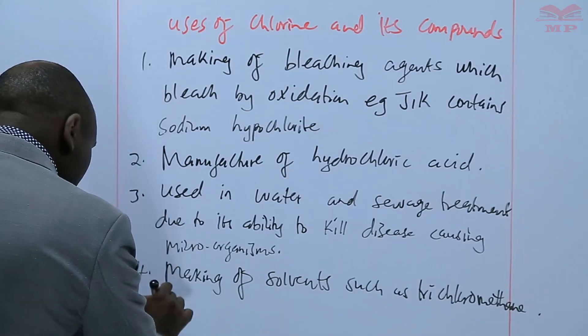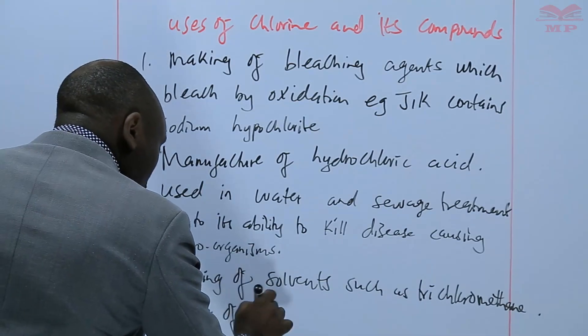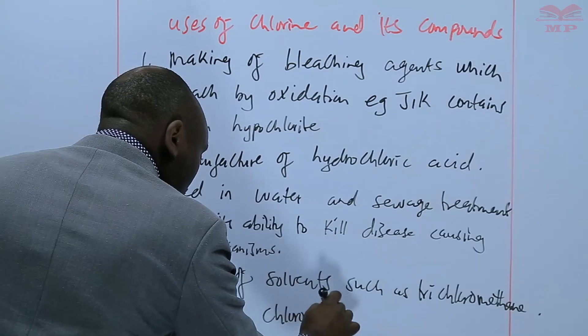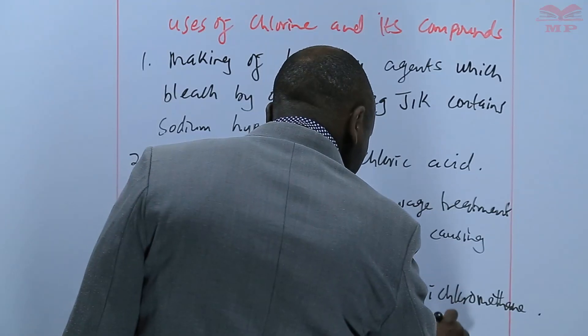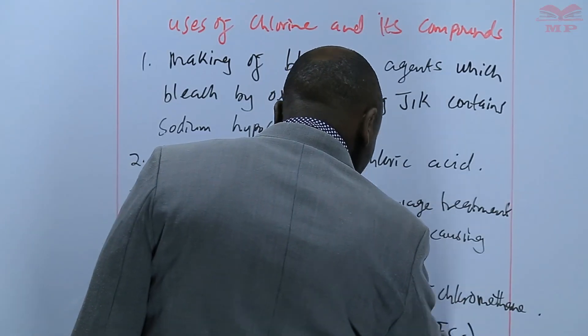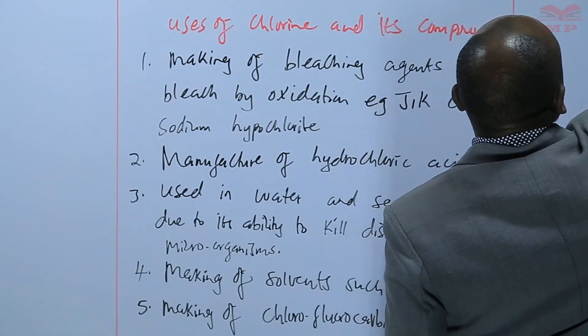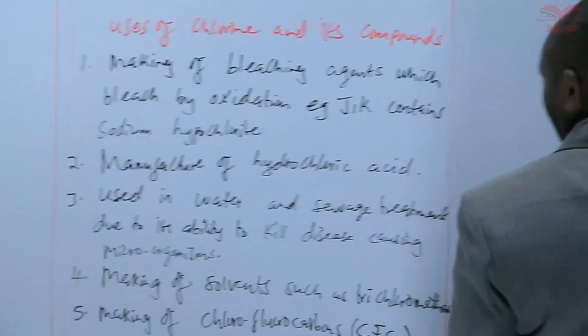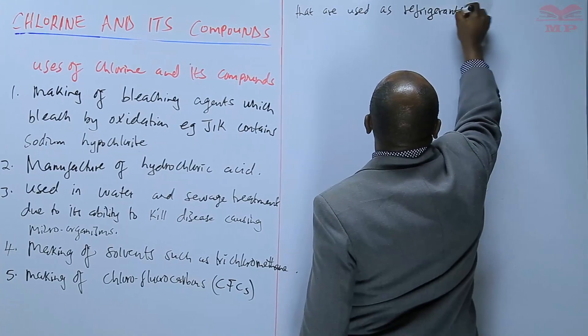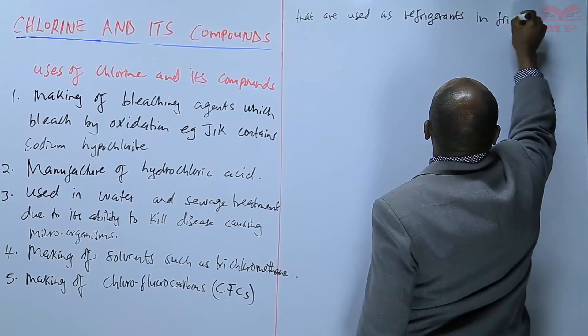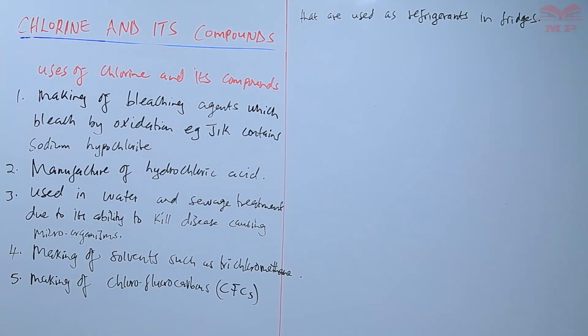Chlorine is also used in the making of chemicals called chlorofluorocarbons, CFCs, that are used as refrigerants in fridges.